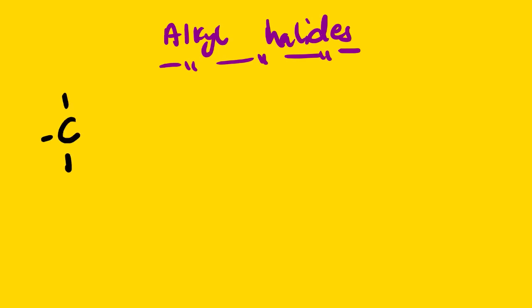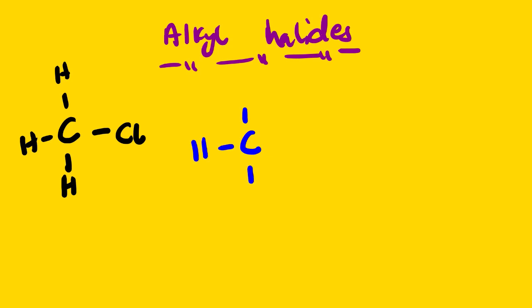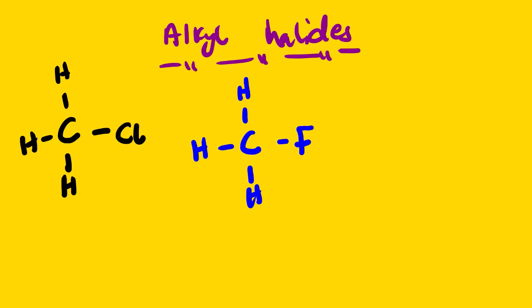For example, we have chloromethane. In order to look at boiling points, we have to compare — we compare this with fluoromethane. Both of these are alkyl halides. Looking at the alkyl group, when I say the same alkyl group, they are both methanes — they consist of only one carbon and three hydrogens. It's actually the methyl group, so the alkyl group is the same.